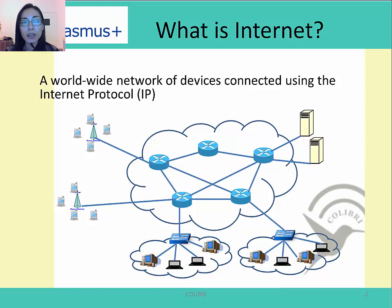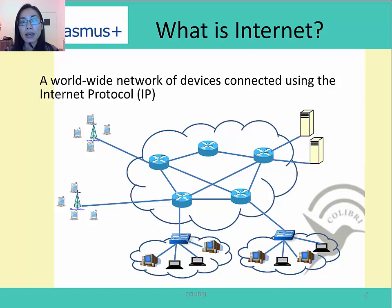And in the near future, we expect that everything, even household devices such as washing machines and freezers, can be also connected to the internet. Internet has become more and more complex, and it is not just a homogeneous network, but a network of heterogeneous networks.